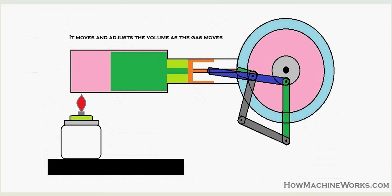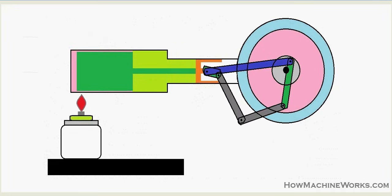The power piston moves and adjusts the volume as the gas moves. The power piston controls the internal volume of the gas as the displacer piston moves and the hot air moves in and out. This change in volume is adjusted by the power piston, which also stores energy — that's why it's called the power piston. The energy is given to and stored in the disc, and the engine continues to run.